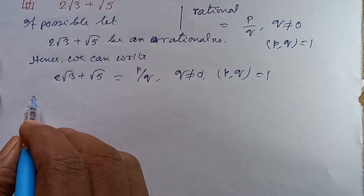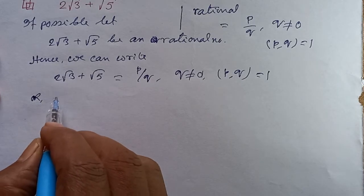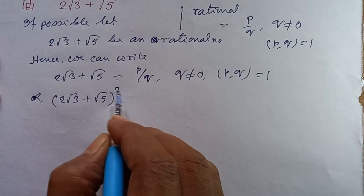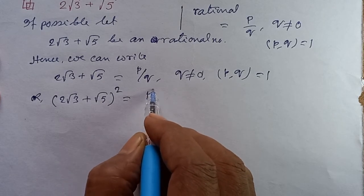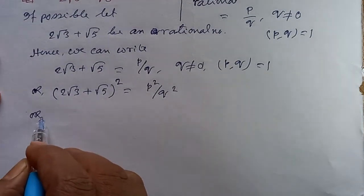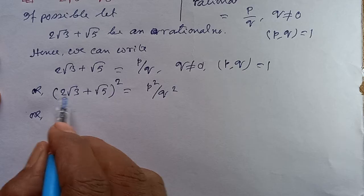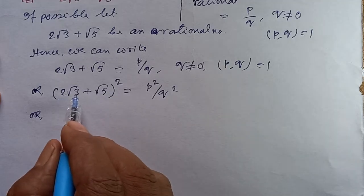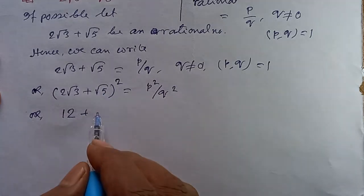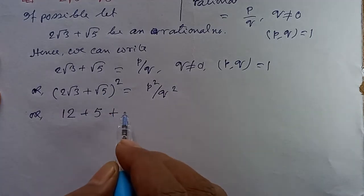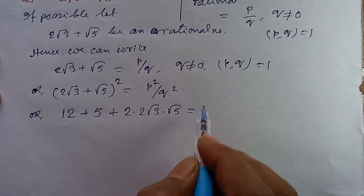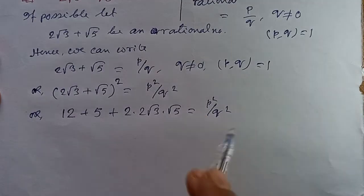Squaring both sides, we get the whole square equals p square by q square. Using the identity (a + b)² = a² + b² + 2ab, we expand: 4 into 3 equals 12, plus root 5 squared equals 5, plus 2 into 2√3 into √5, equal to p square by q square.